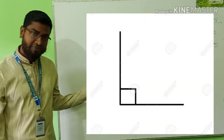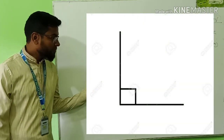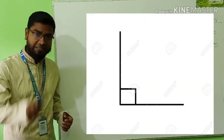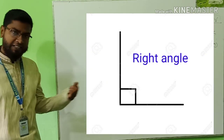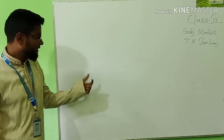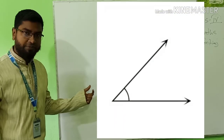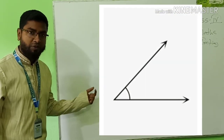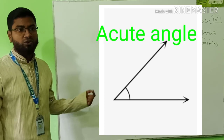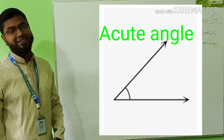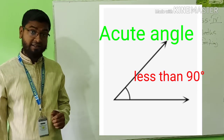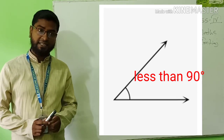See, what type of angle is this? Yes, you are right. This is a right angle. It is measured exactly 90 degrees. See the other picture. What type of angle is this? Acute angle. Yes, because it is measured less than 90 degrees.